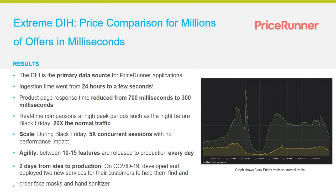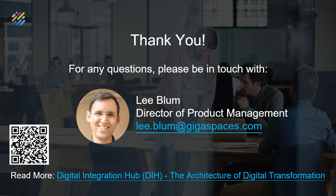We also have a bank based on our digital integration hub that goes from idea to production in one day, with 1,000 services running on the data grid. These are just two cases showing how moving from traditional DIH architectures to data grid-based DIH solutions delivers faster performance, more concurrency, more availability, and more agility. If you have questions, contact me or use this link or QR code to read more about digital integration hubs and data grids.